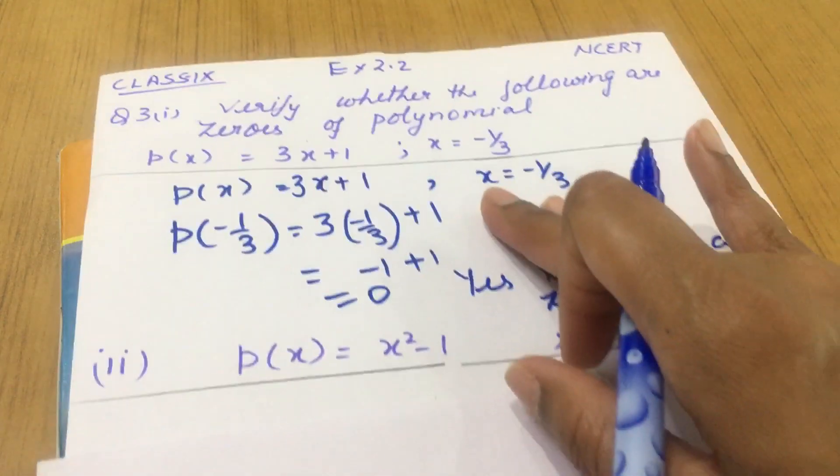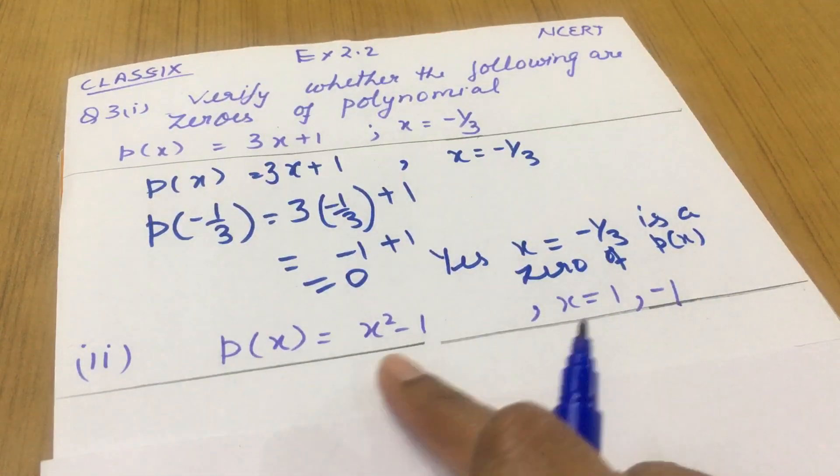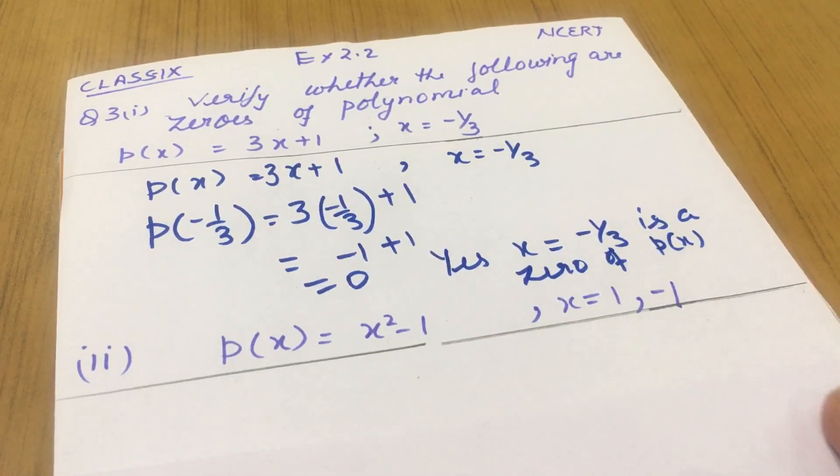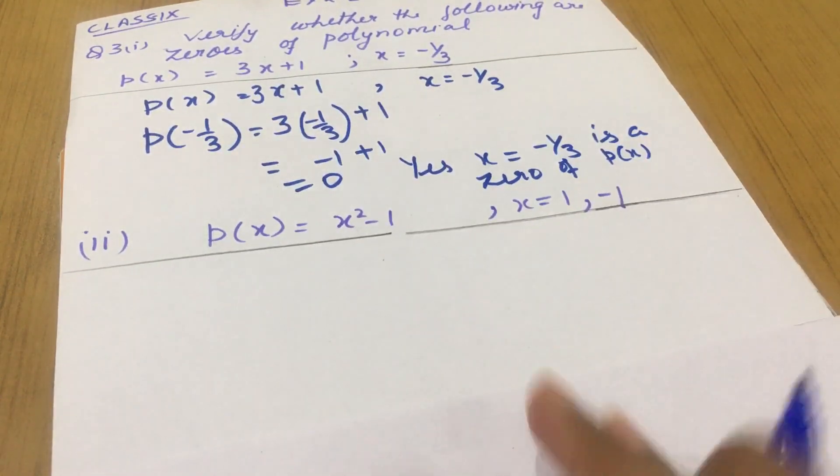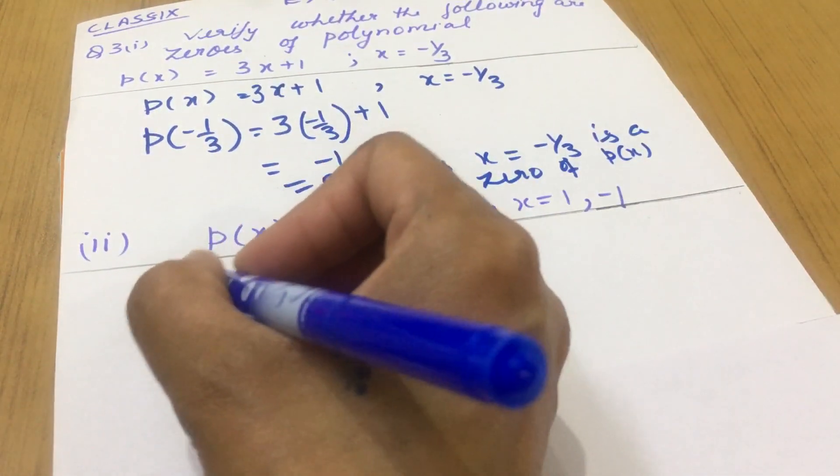Now let us check for the next part also. Second part, p(x) equals x square minus 1 and they have given 2 values. So first of all we will substitute x as 1.